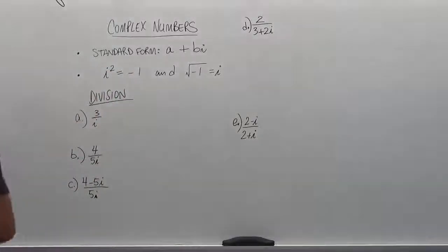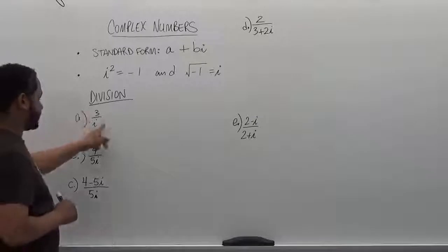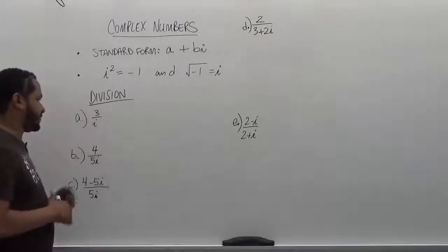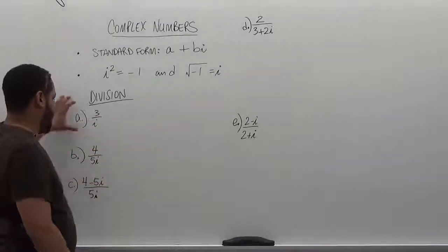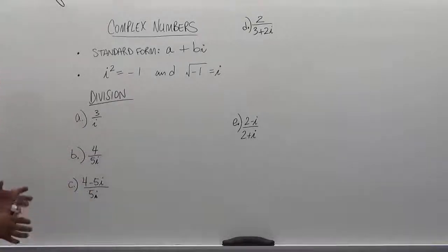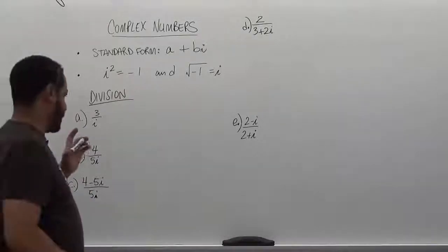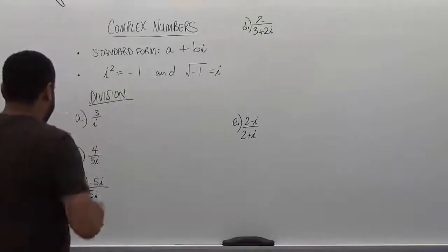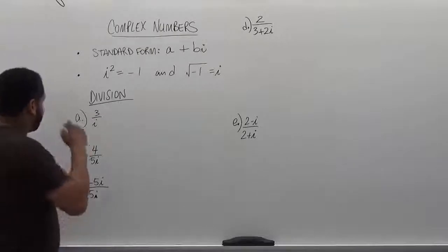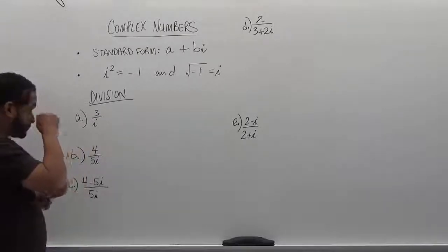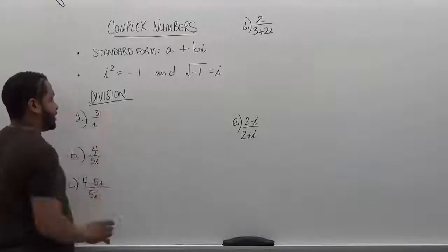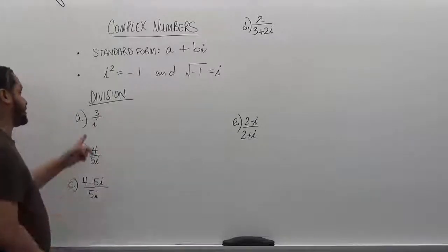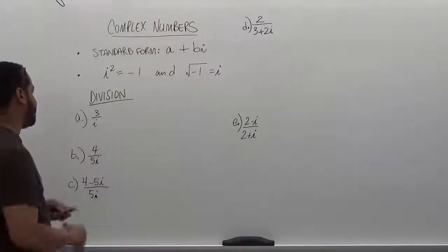Let's continue with this division series, the five problem series set. We have 3 divided by i as the first problem. This is the most basic form of rationalizing a denominator that we can get. To rationalize this denominator, we'll be multiplying the top and bottom by the i term alone, since it's a singular term on the bottom.